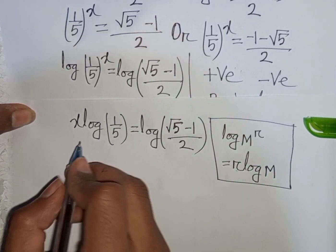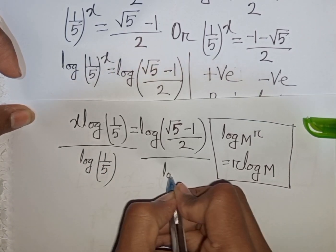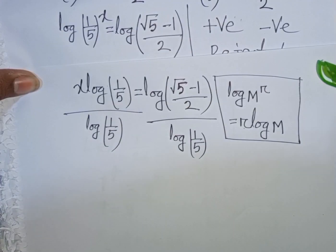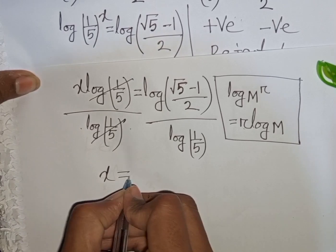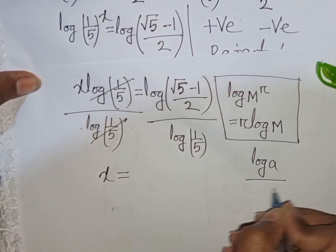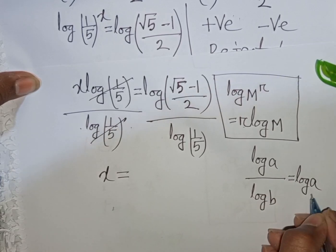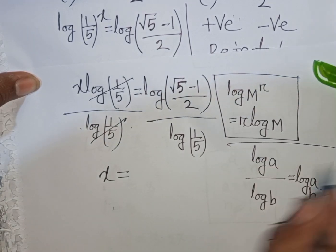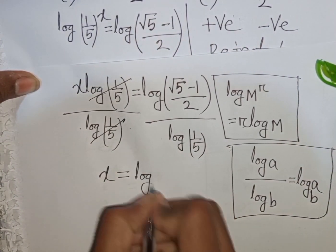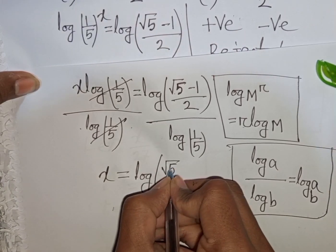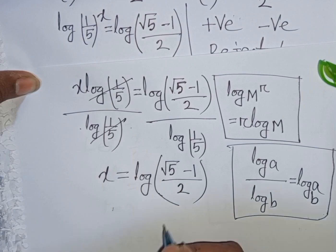To find x, we divide both sides by log(1 over 5). Using the formula log a divided by log b equals log base b of a, we get x equals log base (1 over 5) of (square root of 5 minus 1) over 2.